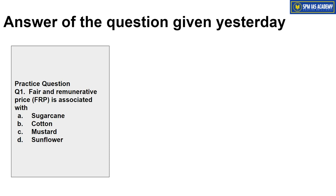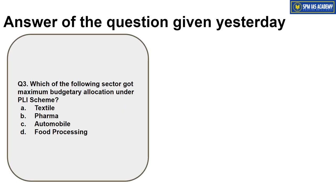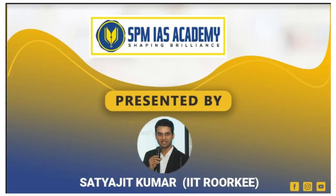Now let us check the answers to yesterday's practice questions. Fair Remunerative Price is for sugarcane — correct answer is Option A. Which country has recently accepted Bitcoin as its official currency — correct answer is Option B, El Salvador. And under the PLI scheme, the highest budgetary allocation has been made for the automobile sector — correct answer is Option C.